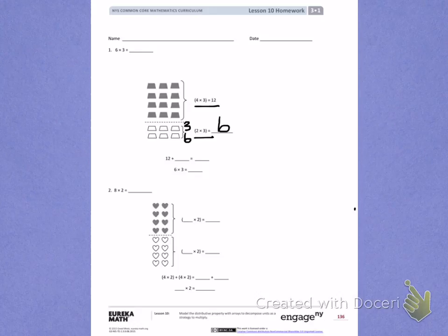Down below, I've taken my answer for 4 times 3. Now I'm going to take my answer for 2 times 3, which is 6.